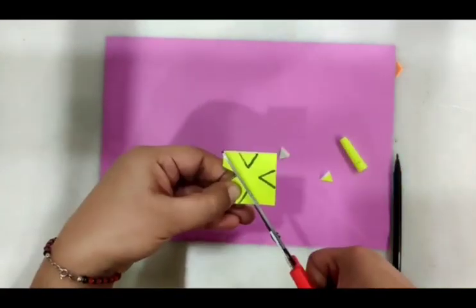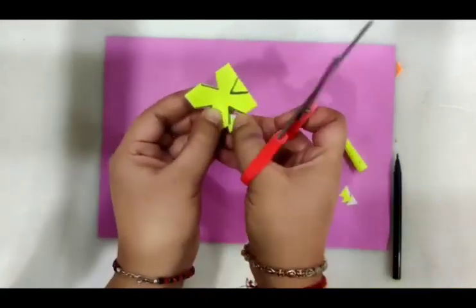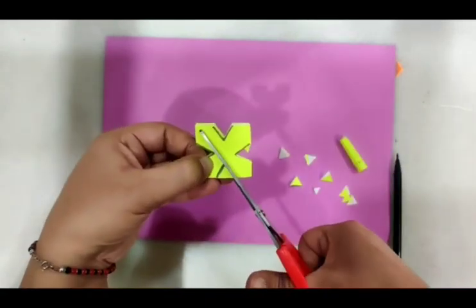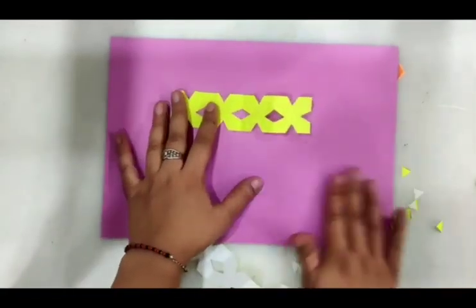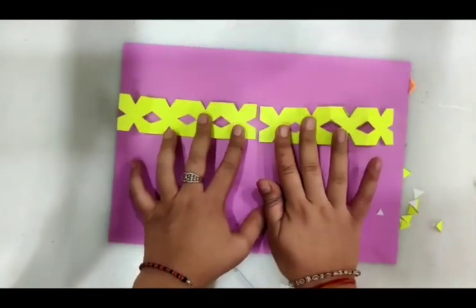Now with the help of the scissor, cut all these small triangles. Once all the four triangles are cut, unfold the paper to form the border. Paste it on another color and use this creative border anywhere.